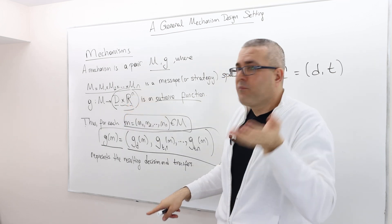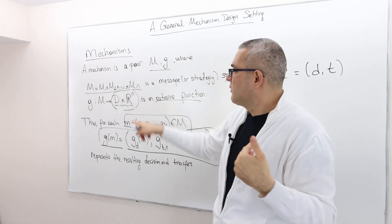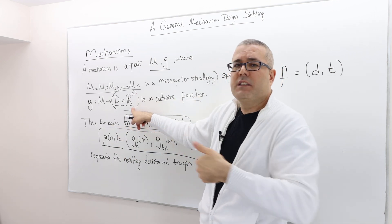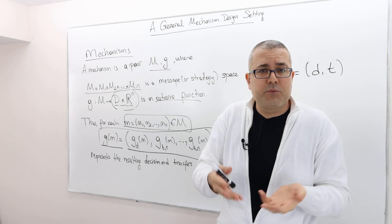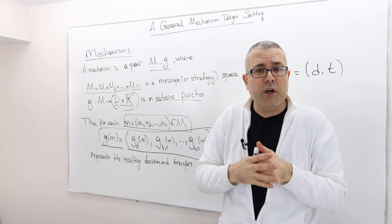Well, the bidder - I'm sorry, the winner is going to pay his bid and everybody else is going to pay zero. So this is how the first price or the second price or the third price or all pay auctions work.